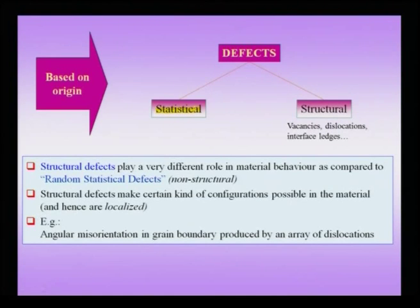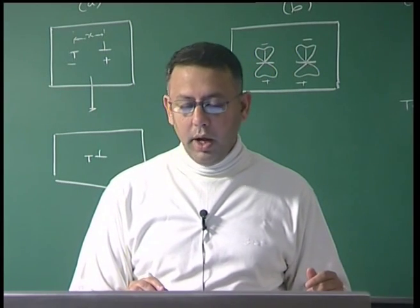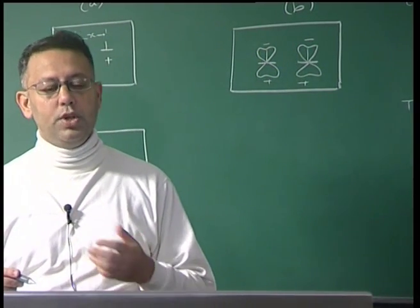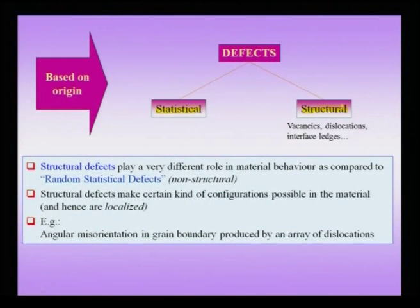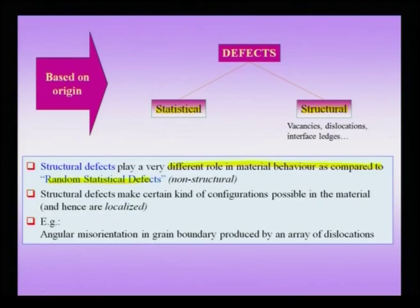There can be statistically stored defects — present for no specific reason in the crystal — and what we may call structural defects. The importance of this classification is that a statistically stored or random statistical defect has a different role in material behavior compared to a structural defect. A single defect can also go from being a statistically stored defect to a structural defect — we have already considered one such example and will return to it from this classification viewpoint.